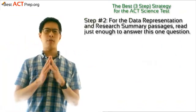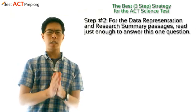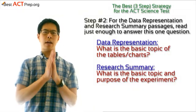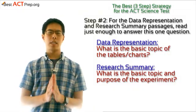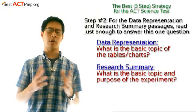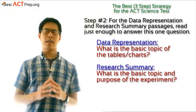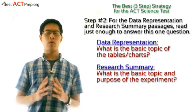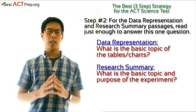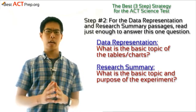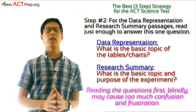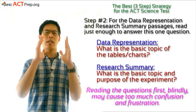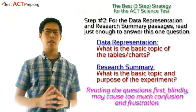Step number two: for the data representation and research summary passages, read just enough to find out one piece of information before reading the questions. For the data representation passages, find the answer to this question: what is the basic topic of the tables and the charts? And for the research summary passages, find the answer to this question: what is the basic topic and purpose of the experiment? The reason why we want to find the answers to these simple questions first is because they'll give us something basic to work with as we approach each question. Reading the questions first blindly can result in utter confusion and frustration sometimes, so it's better to have at least something to help orient us.